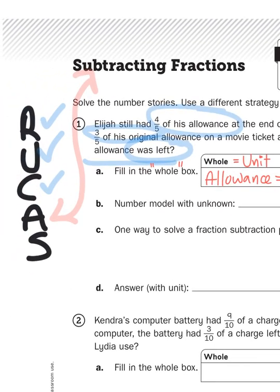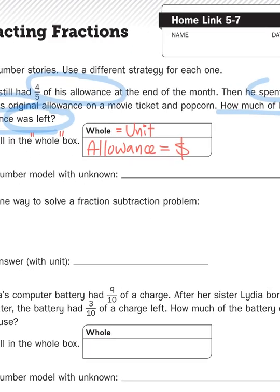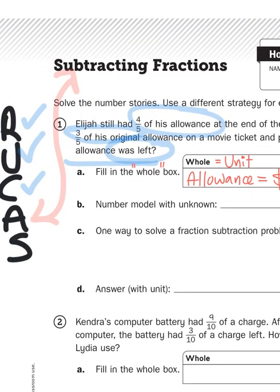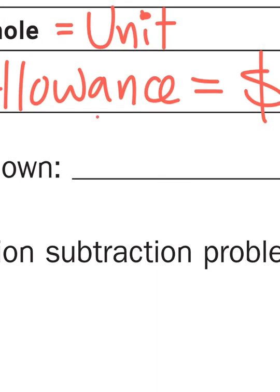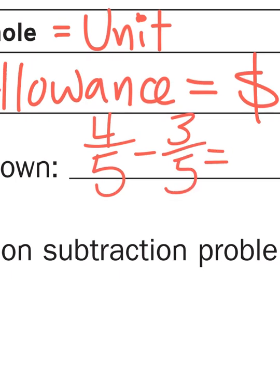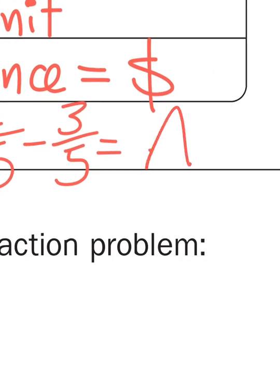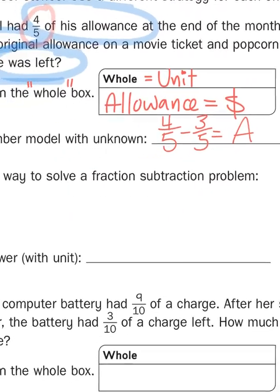So I now need a number model with an unknown. So what am I subtracting? What am I looking for? I'm looking for numbers. Here's a number, four-fifths. Here's another number, three-fifths. So I'm going to be subtracting four-fifths minus three-fifths. And it's going to equal an unknown. Let's say A for allowance. The letter that we write as our unknown is just a placeholder until we figure out the answer.